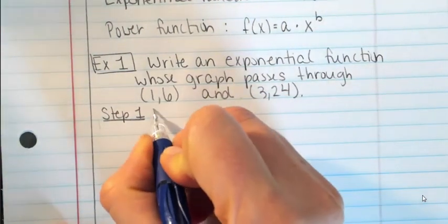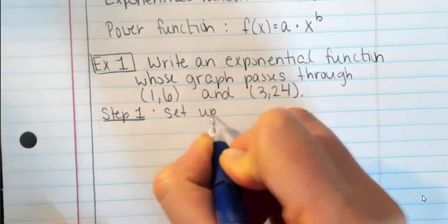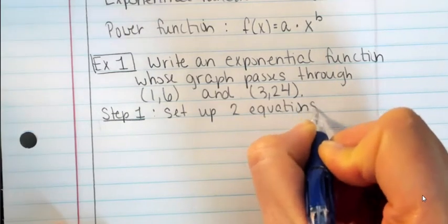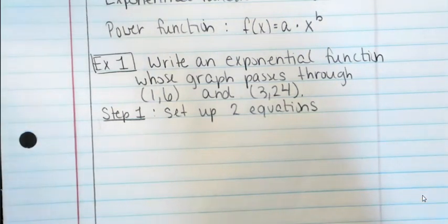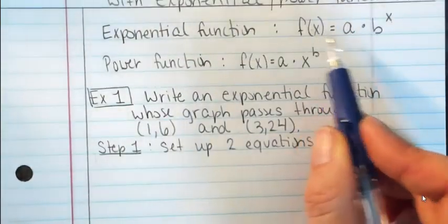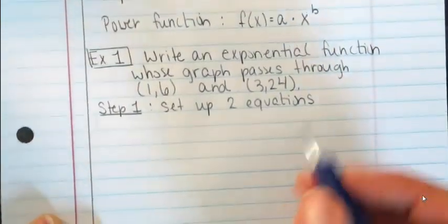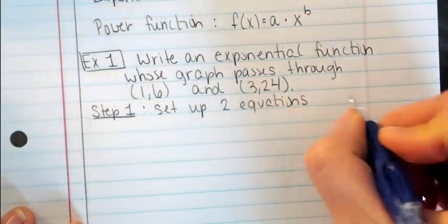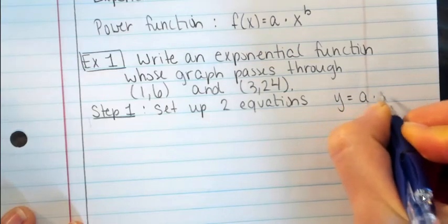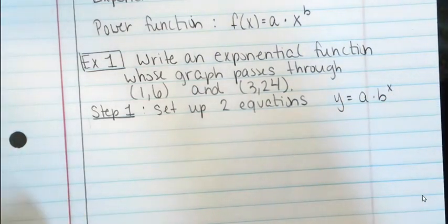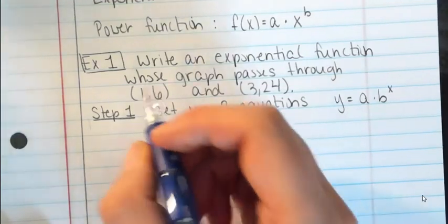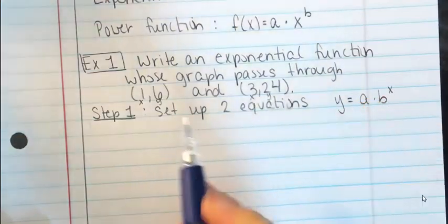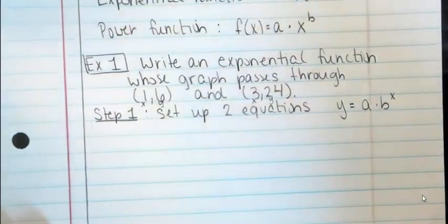We are going to set up two equations. Since we're dealing with an exponential function, we'll use y equals a times b to the x. Looking at my first point, x is 1 and y is 6. Second point, x is 3 and y is 24. I'm going to plug these into the equation, doing it two times.